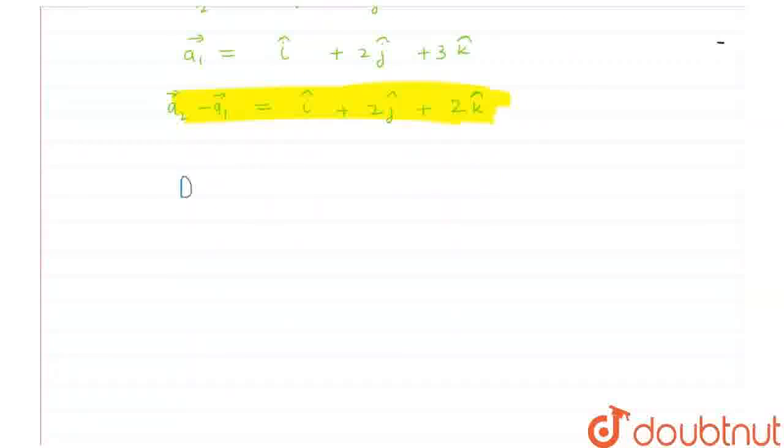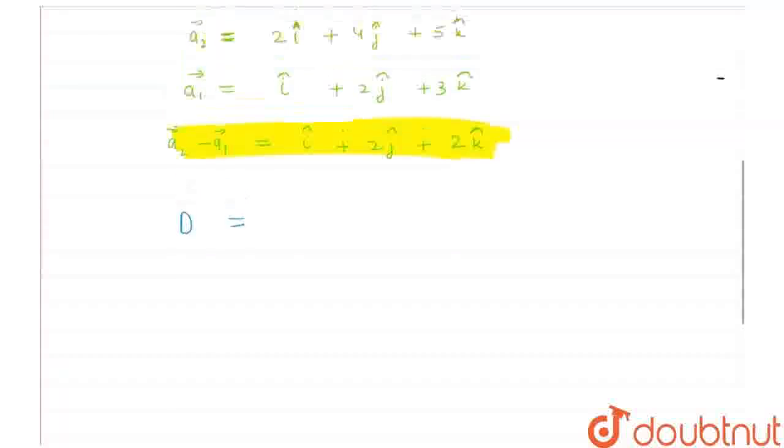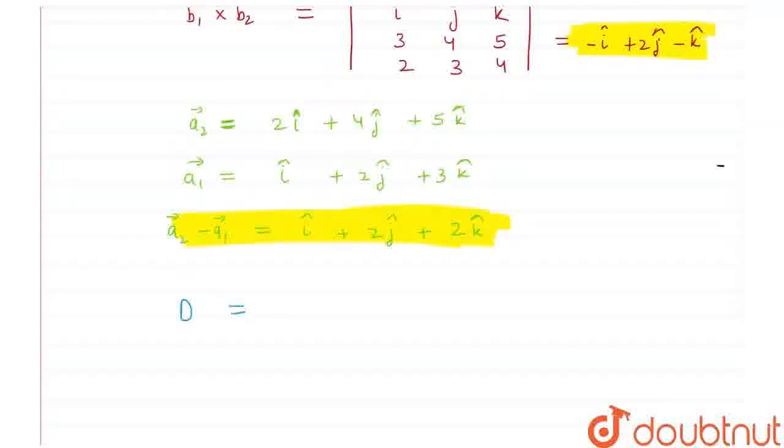So our d would be equal to the dot product of b1 cross b2 into a2 minus a1, that would give me minus 1 plus 4 and minus 4, and below it would be the mod of minus i plus 2j minus k.